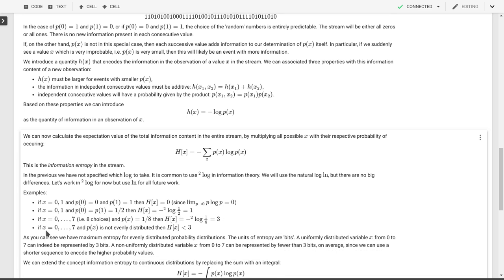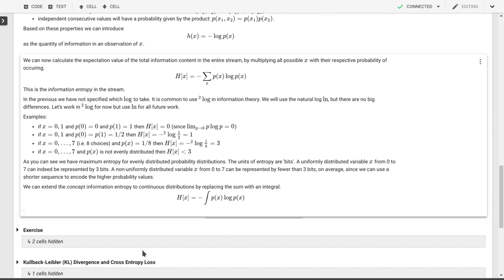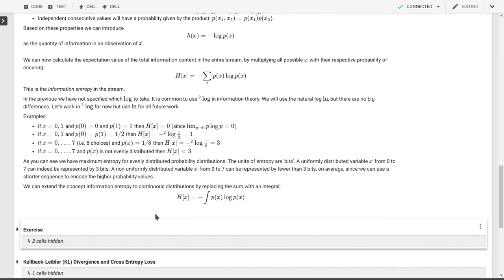Now what does it mean then if our probability is not evenly distributed, if some of those x values are more likely to occur than others? Well, then we'll have less information entropy. And then indeed, it will mean that we can represent those numbers, those values of x, with on average less than 3 bits.